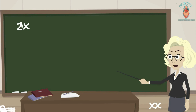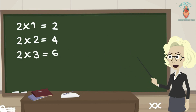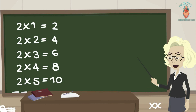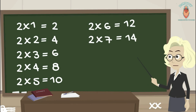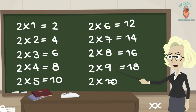2 1s are 2, 2 2s are 4, 2 3s are 6, 2 4s are 8, 2 5s are 10, 2 6s are 12, 2 7s are 14, 2 8s are 16, 2 9s are 18, 2 10s are 20.